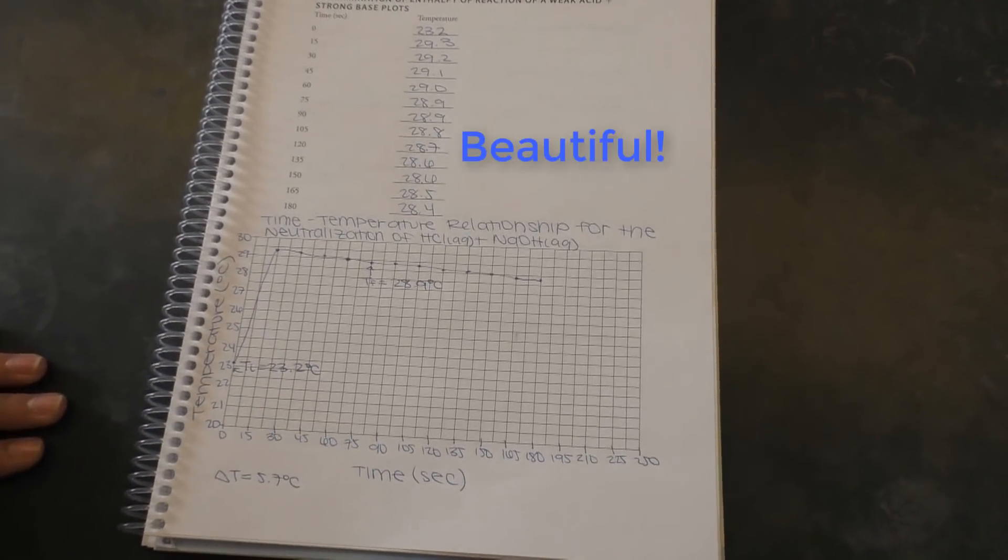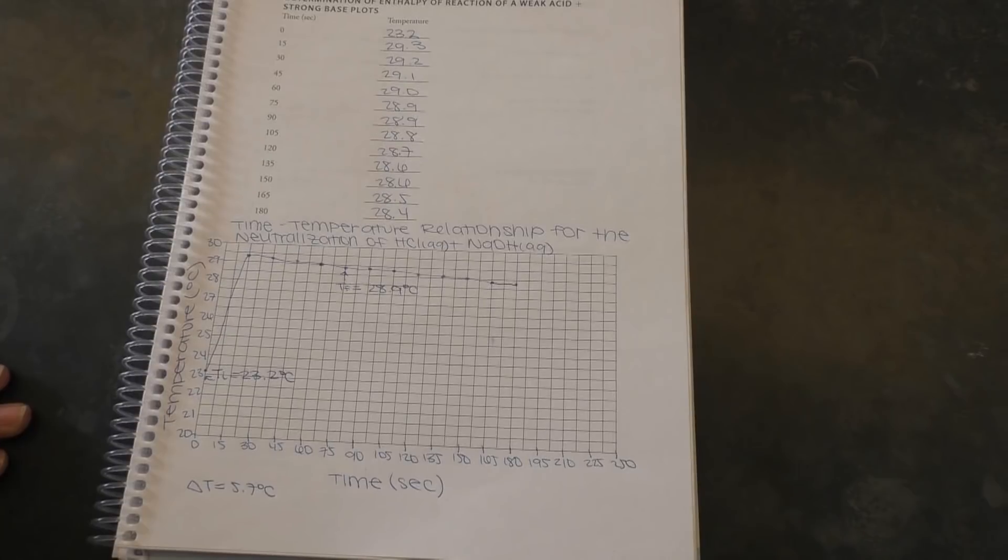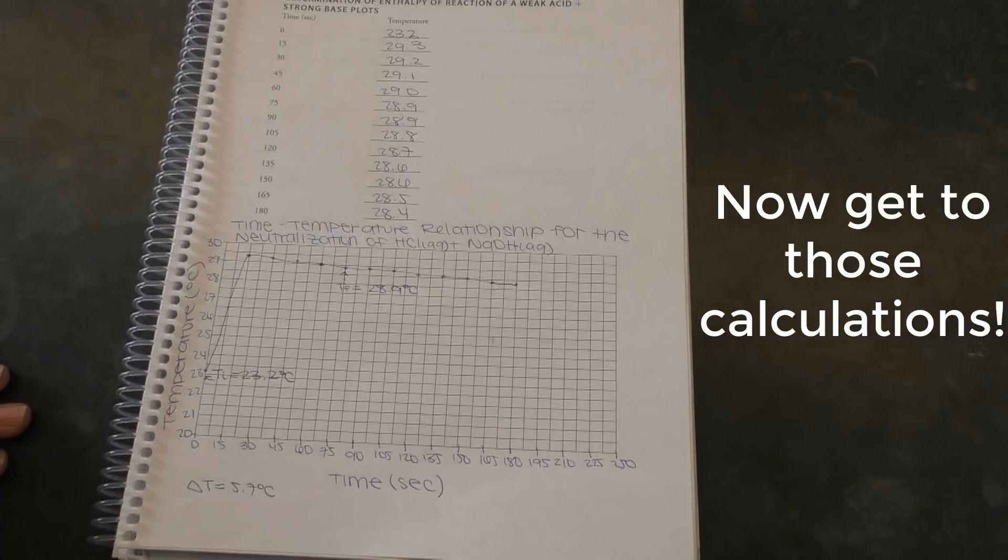With your initial, final, and change in temperatures on your beautiful graphs, you can calculate the heat capacity of your calorimeter as well as your heats or enthalpies of reaction. Now get to those calculations.